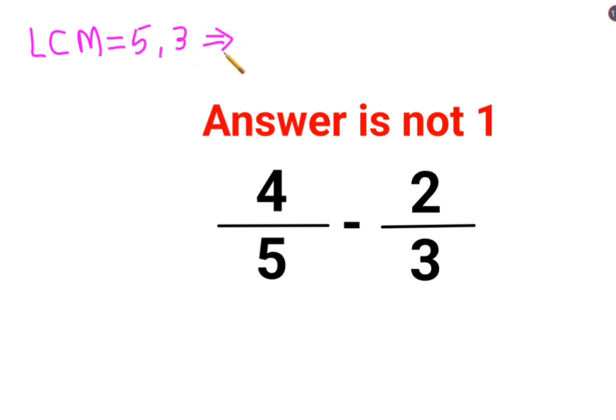Now both of them are prime numbers. So LCM becomes what? 5 multiplied by 3. So this becomes 15. Means I need to make my denominator as 15 in both cases.